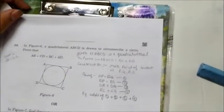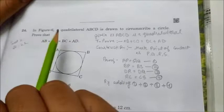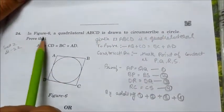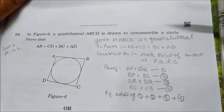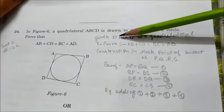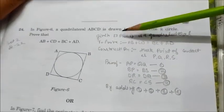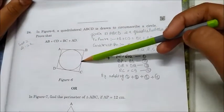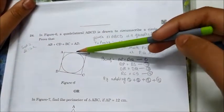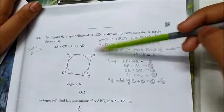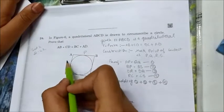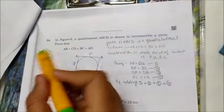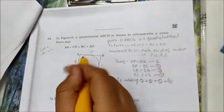Question number 24: In figure 6, a quadrilateral ABCD is drawn to circumscribe a circle. Prove that AB + CD = BC + AD. Given that ABCD is a quadrilateral circumscribing a circle, we mark the points of contact on the quadrilateral as P, Q, R, and S.